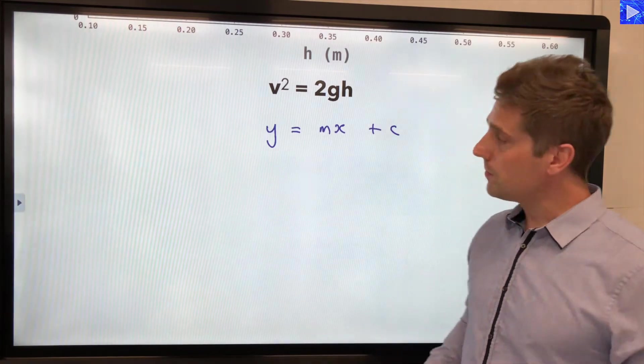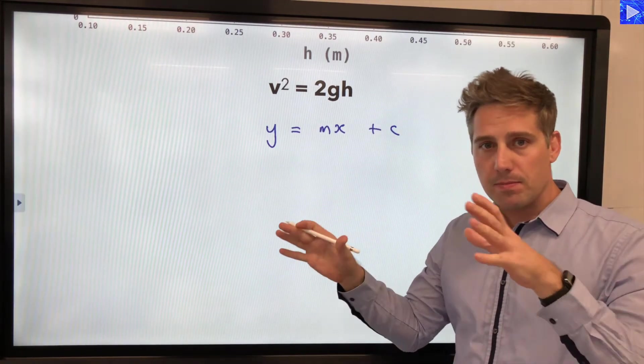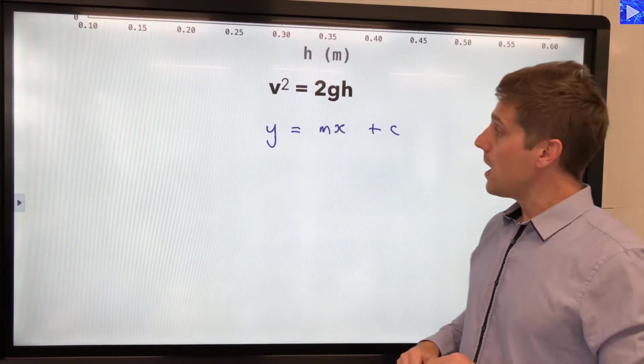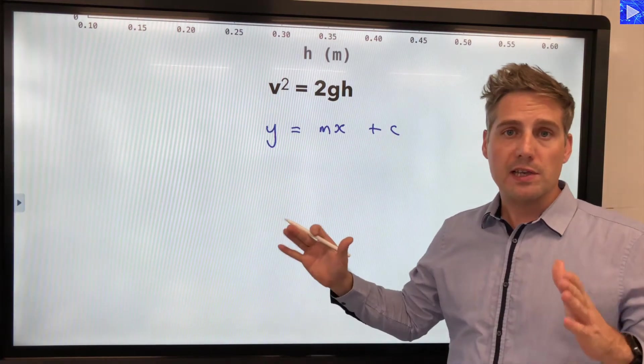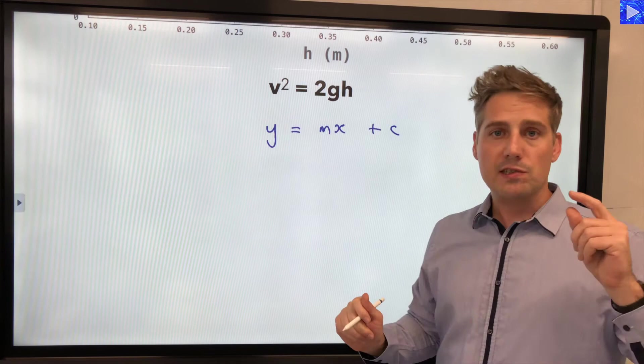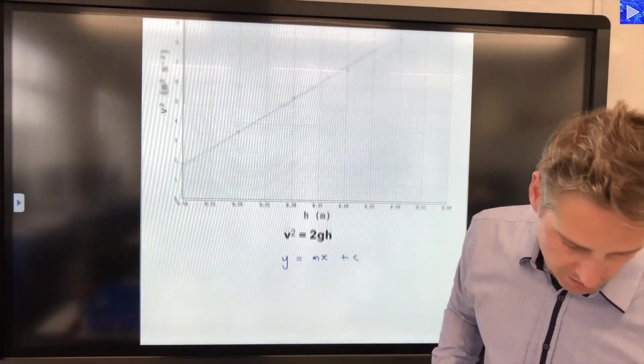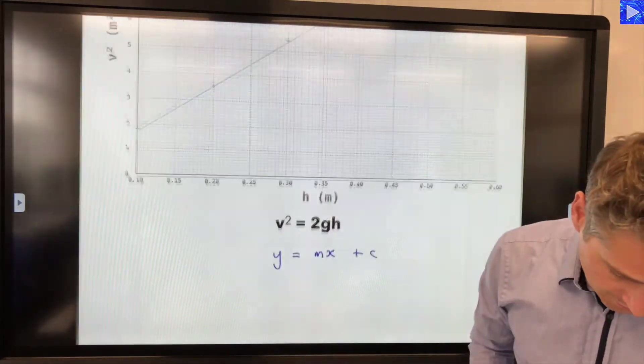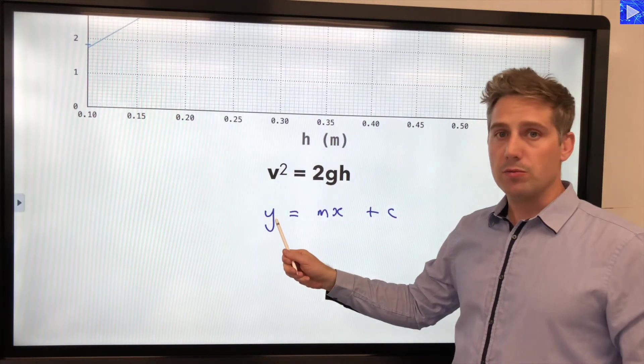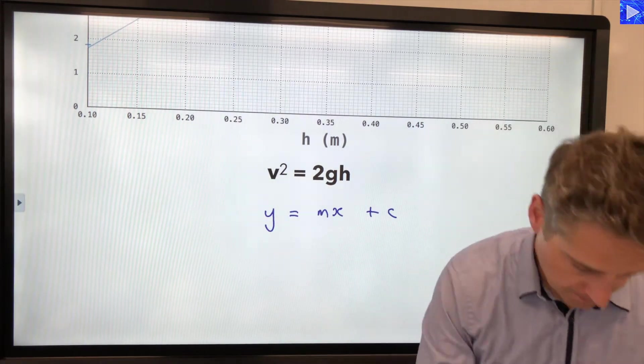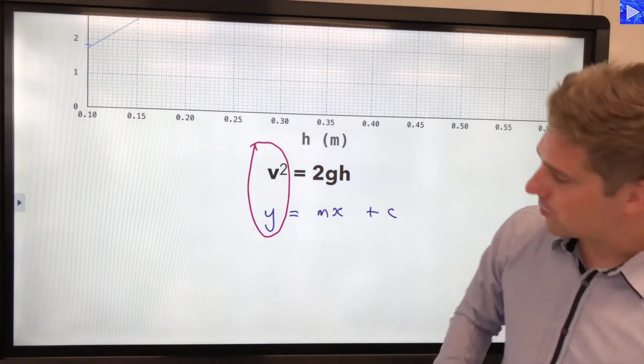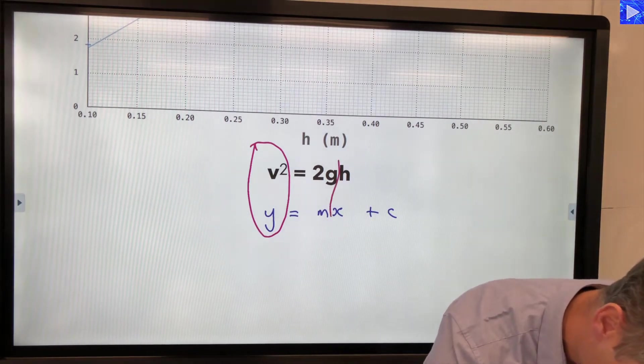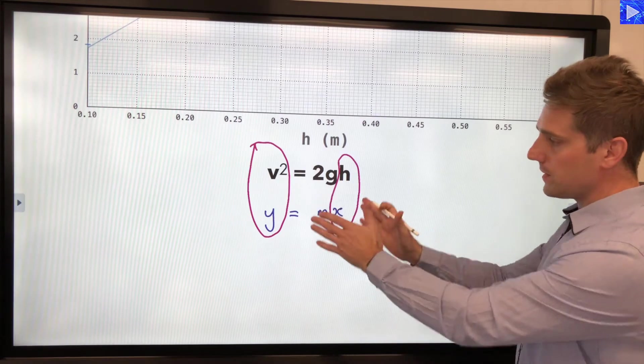This usually works perfectly well but with more complex equations it might be a little harder to see and I'll show you what you can do in that case when we do the more complex examples. What we need to do first is look at our graph see what's plotted on the y axis what's plotted on the x axis. We had h on the x axis and v squared on the y axis. So what that tells me is that my y variable from y equals mx plus c is v squared. I'm just going to circle those. And my x variable is h because it's on the x axis. So I circle those as well. So I've identified y and x now.